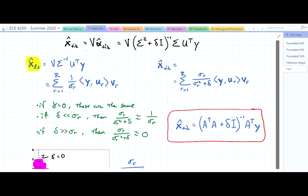So with the Tikhonov regularized form, it's basically the same as that, except that now instead of 1 over sigma_r, we have sigma_r over sigma_r squared plus delta. Everything else is the same.